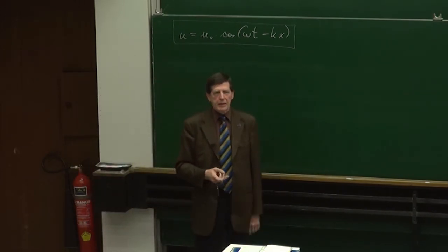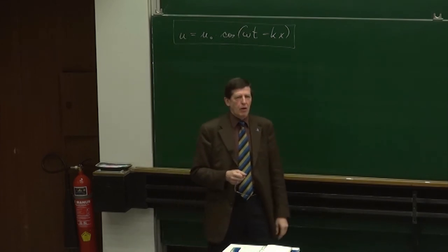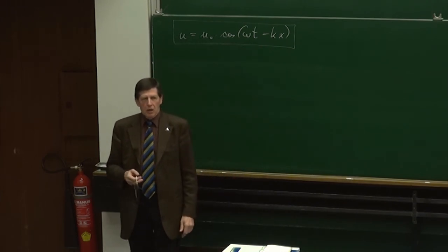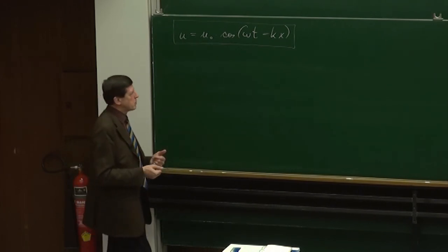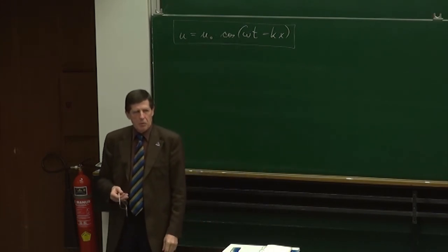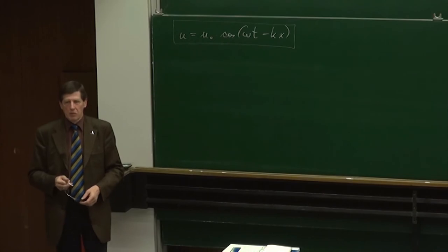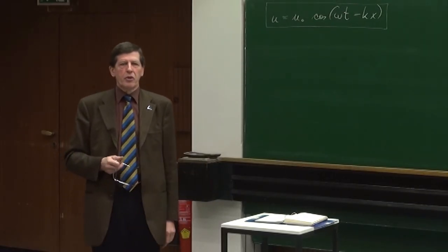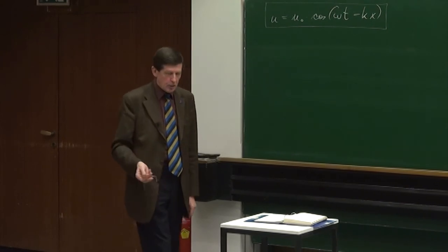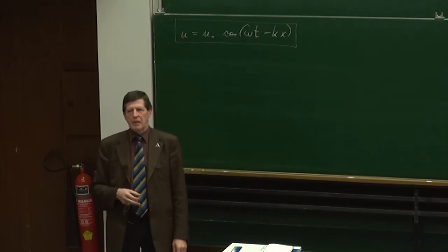Das ist eine eindimensionale Darstellung, und wenn wir einen bestimmten Punkt längs der Ausbreitung dieses Wellenfeldes aussuchen, zum Beispiel x gleich 0, dann wird nur eine Cosinus-Omega-T-Abhängigkeit überbleiben. Das ist genau das, was wir in den letzten Tagen schon besprochen haben: eine harmonische Schwingung, mit der üblichen Geschichte, dass die rücktreibende Kraft proportional zur Auslenkung aus der Ruhelage ist, wodurch sich die entsprechende Bewegungsgleichung ergibt, deren Lösung als Cosinus oder als komplexe E-Potenz geschrieben werden kann.